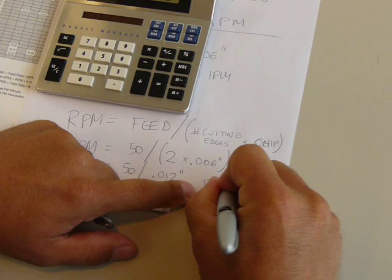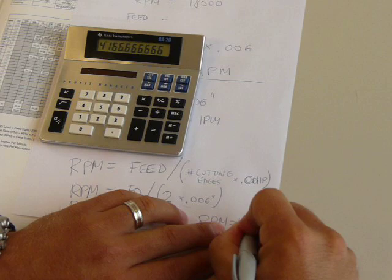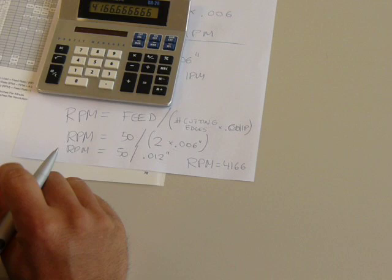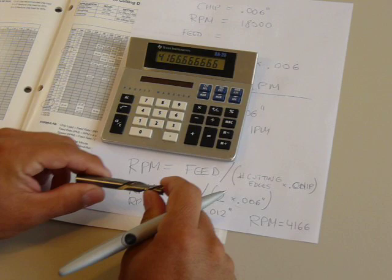Therefore, we know that for this particular tool in order to get the correct chip load and running at 50 inches a minute our RPM needs to be as low as 4,166. So now that we know the correct RPM for this application is 4,166 that is the correct RPM in order to maintain the correct chip load, achieve good finish and good tool life.